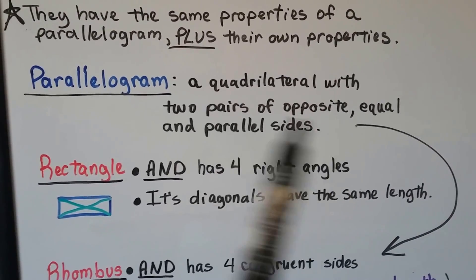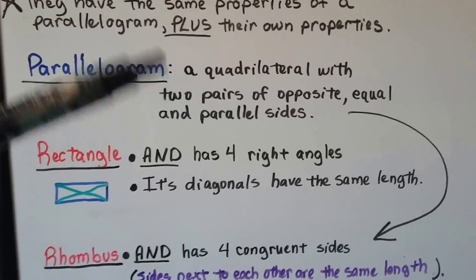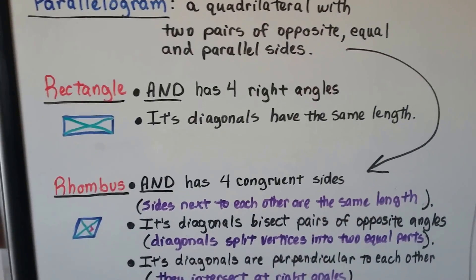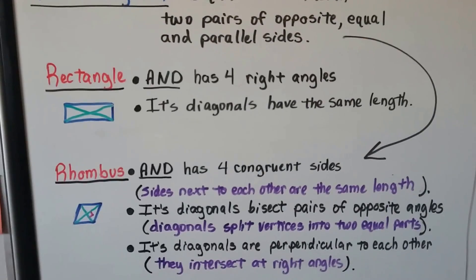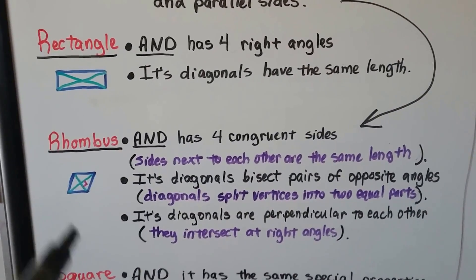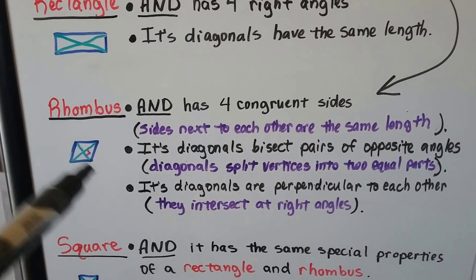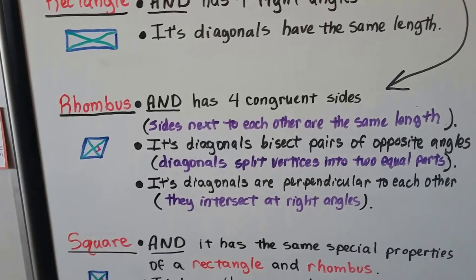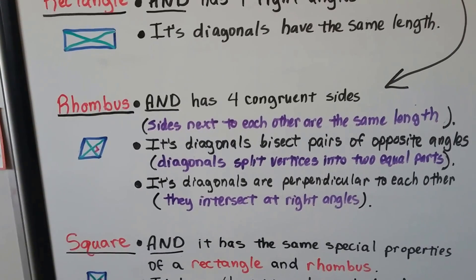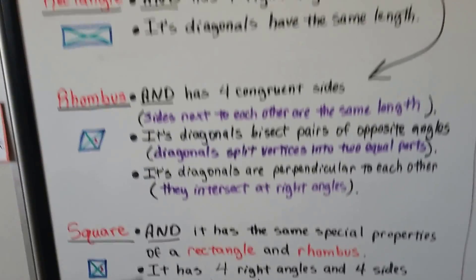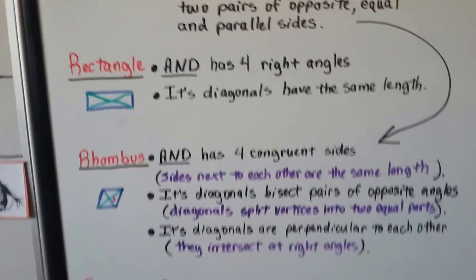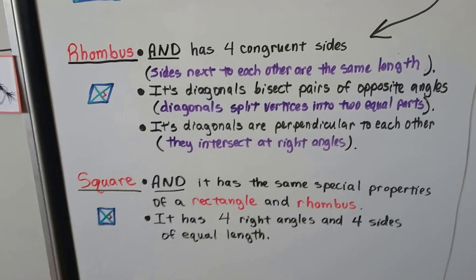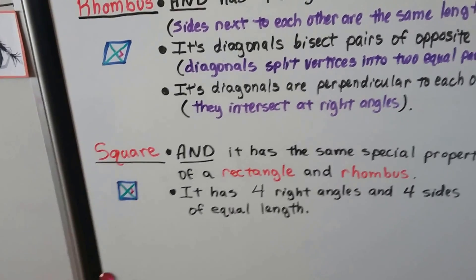A rectangle has all the parallelogram traits plus four right angles, and its diagonals have the same length. A rhombus has the parallelogram traits plus four congruent sides, and its diagonals bisect the pairs of opposite angles and are perpendicular to each other — we can see the little right angle box inside. A square has the traits of a parallelogram and the traits of both a rectangle and a rhombus: four right angles, four sides of equal length, and diagonals that are the same length and perpendicular.